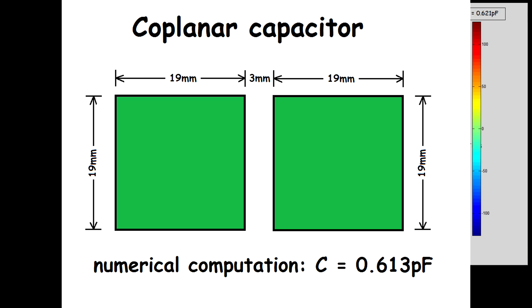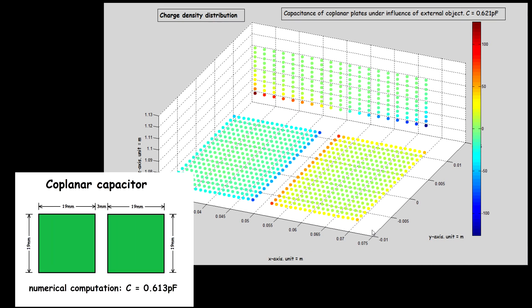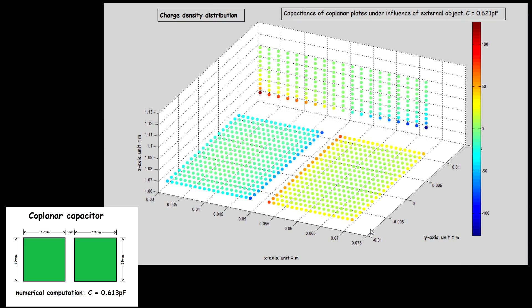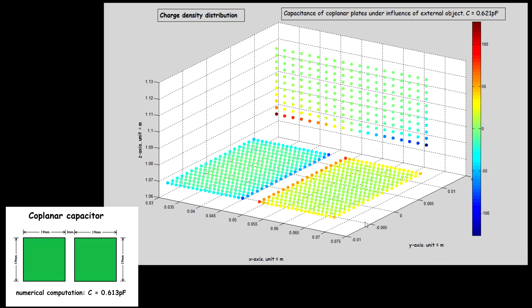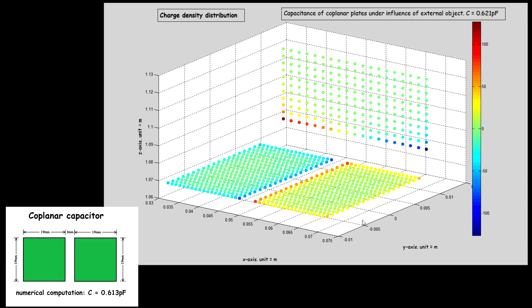For a coplanar capacitor, numerical solution shows that the capacitance increases when the third plate is placed nearby. And the third plate is indeed polarized by the electric field.